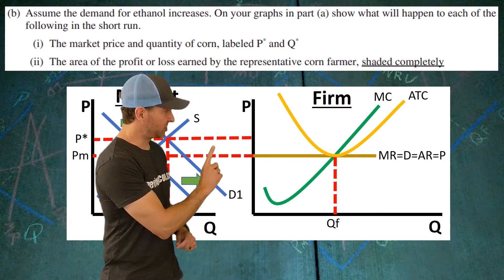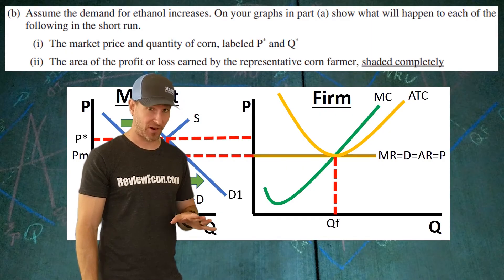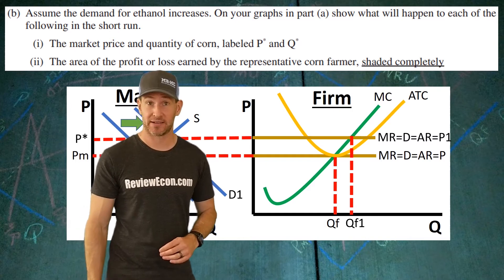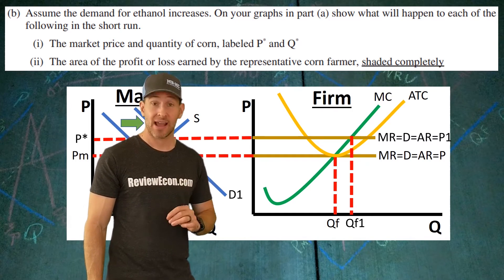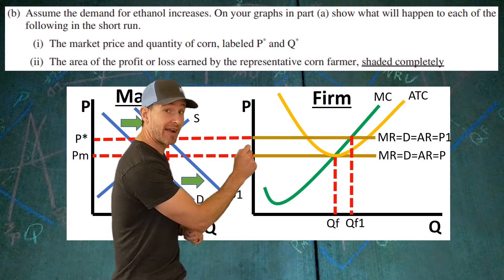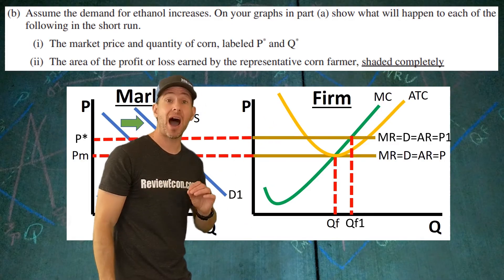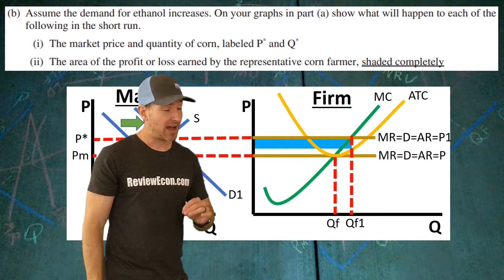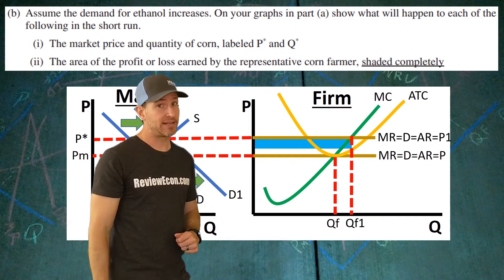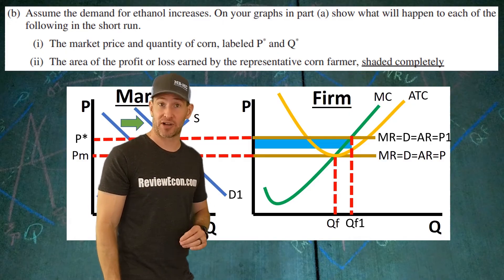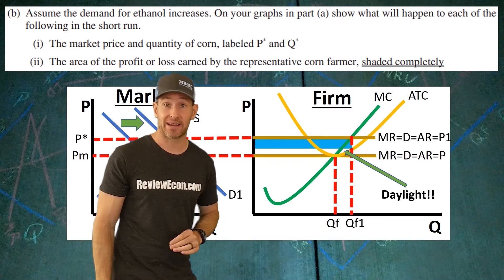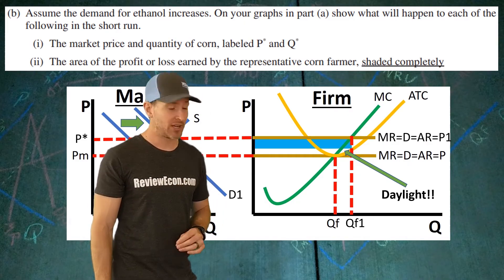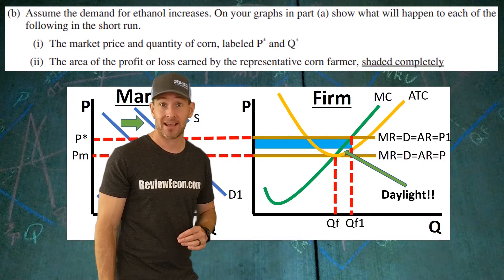Now we're going to turn our attention to the firm graph. The price in the market just went up, which is going to shift the marginal revenue, demand, average revenue, and price upward as well, giving us a new higher MR equals MC profit maximizing quantity. At that new profit maximizing quantity, go up until you hit the average total cost curve and continue up to the new higher price. Those two points, brought to the axis, give you your shaded area of profit. Note: the profit box does not go down to the old demand curve and does not go to the bottom of the ATC curve — you need to clearly see that gap to get the points.